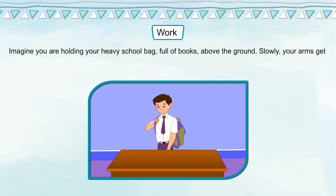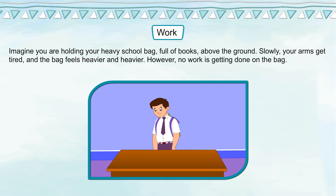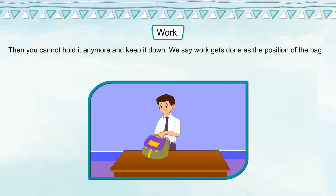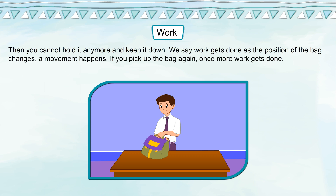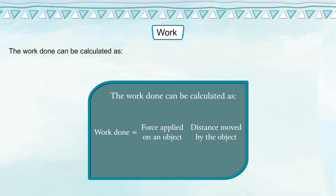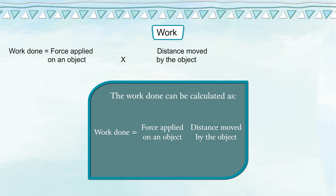Imagine you are holding your heavy school bag full of books above the ground. Slowly, your arms get tired and the bag feels heavier and heavier. However, no work is getting done on the bag. Then you cannot hold it anymore and keep it down — work gets done as the position of the bag changes. If you pick up the bag again, once more work gets done. Work done is equal to force applied on an object multiplied by the distance moved by the object.